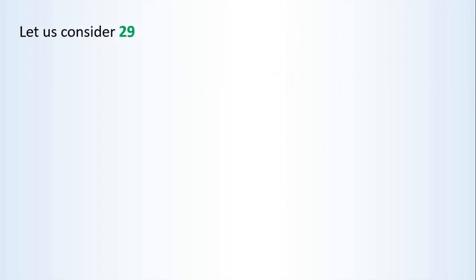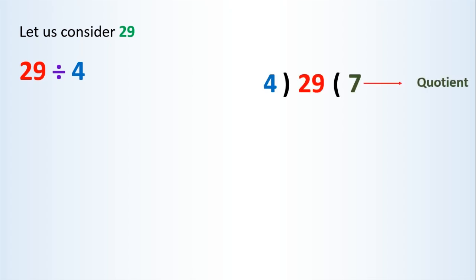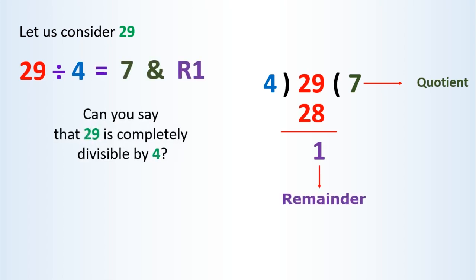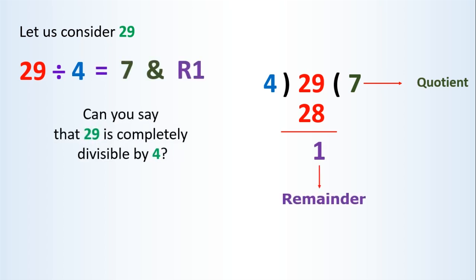Let us consider 29. 29 divided by 4. If we divide 29 by 4, we get a quotient of 7 and a remainder of 1. Now, can you say that 29 is completely divisible by 4? The answer is: 29 is not completely divisible by 4, because there is a remainder.